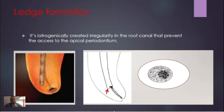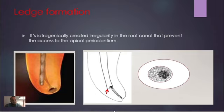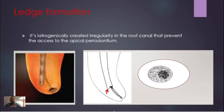So what is a ledge? A ledge is defined as an iatrogenically created irregularity in the root canal that prevents access to the apical periodontium. In other words, a ledge is created when the working length can no longer be negotiated and the original pathway of the canal has been lost. Our problem is not the ledge itself — the problem is the area below the ledge that must be well cleaned and disinfected. Whenever we fail to bypass a ledge, we will have incomplete instrumentation, incomplete irrigation, and incomplete root filling.